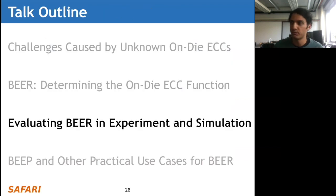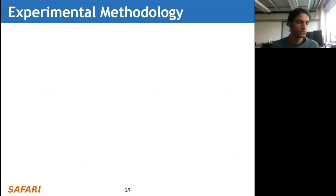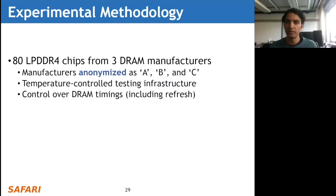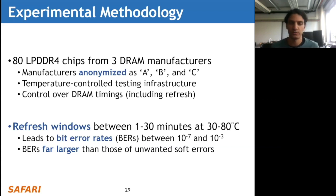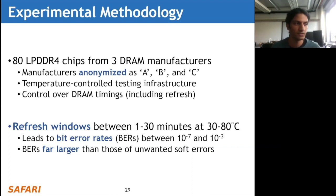Now I'll briefly cover our experimental methodology and results. We used 80 LPDDR4 DRAM chips from three major DRAM manufacturers, anonymized as A, B, and C for confidentiality. All testing is done in a temperature-controlled testing infrastructure to control the data retention errors, which provides control over DRAM timings including DRAM refresh. To induce data retention errors, we test refresh windows between 1 and 30 minutes at temperatures of 30 to 80 degrees Celsius. Considering the default refresh interval is 32 to 64 milliseconds, waiting 1 to 30 minutes is much longer and allows many data retention errors to occur - leading to bit error rates between 10^-7 and 10^-3.